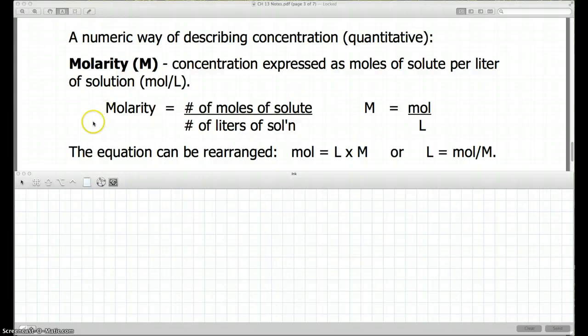Now one thing we need to be able to do is rearrange that equation. So we have big M equals moles over liters. Well, what if we want to solve for moles? Well, we're given the molarity, we're given the liters and the question is asking how many moles do we need? We'd want to rearrange the equation so we get mol equals something. And to do that, what I want to do is I want to get rid of the liters on the bottom here. To do that, I'm going to multiply by L. We can do the opposite.